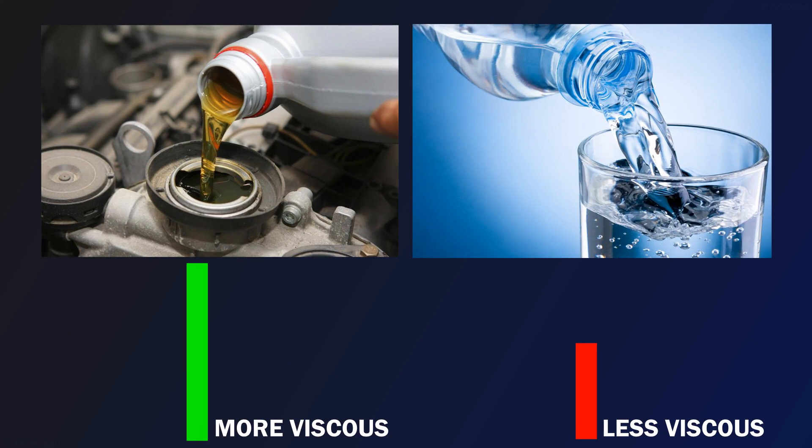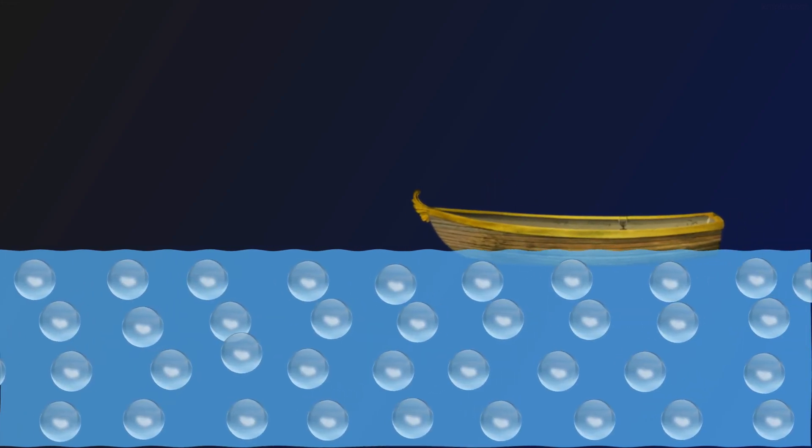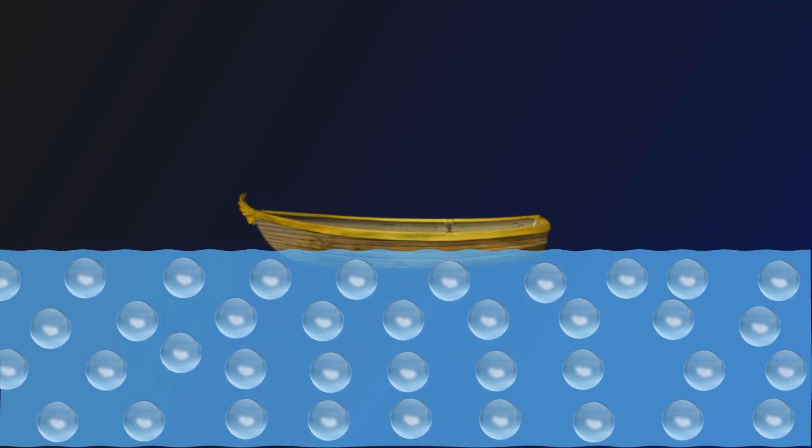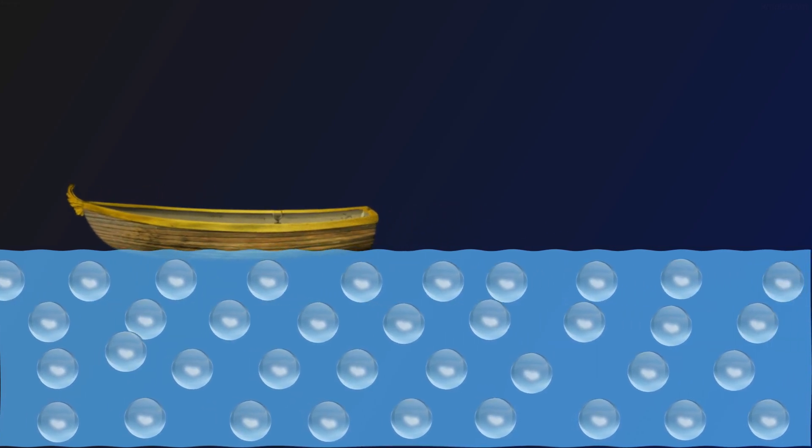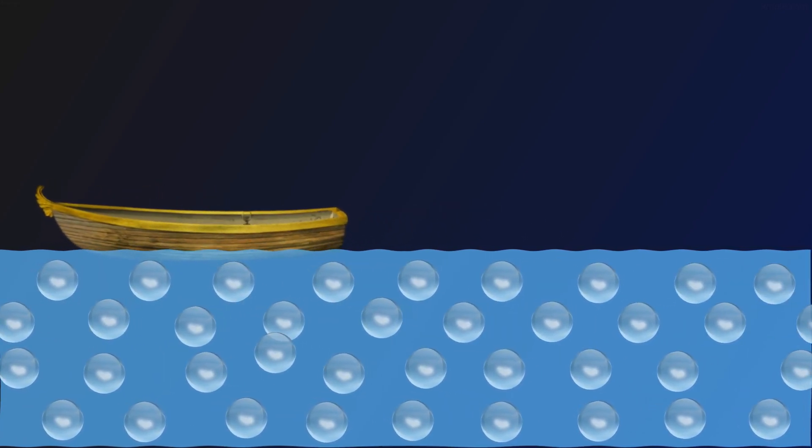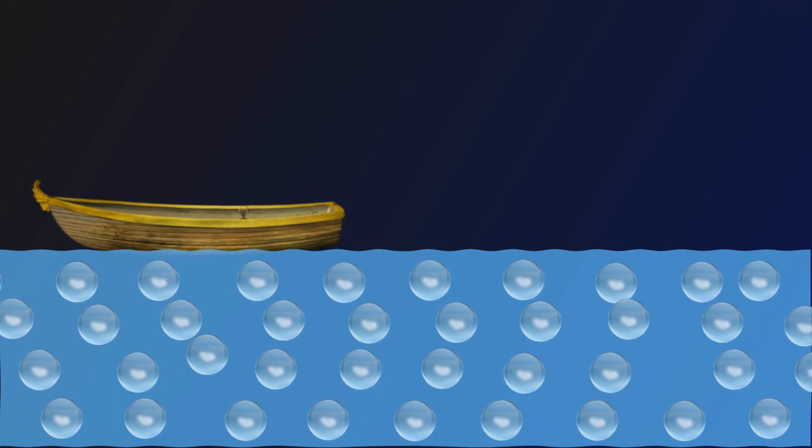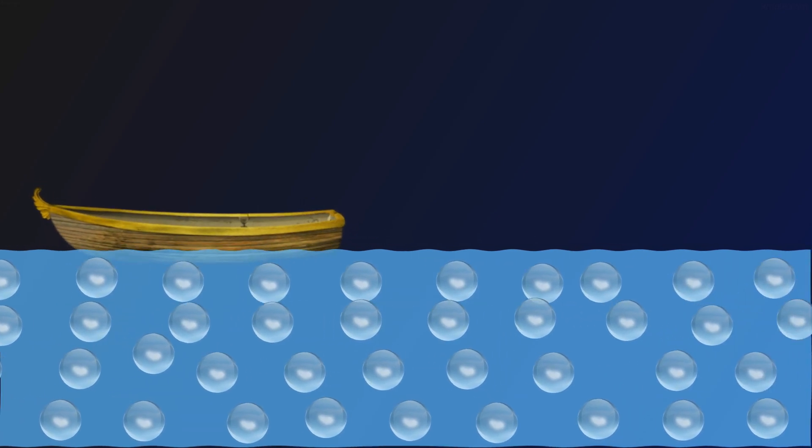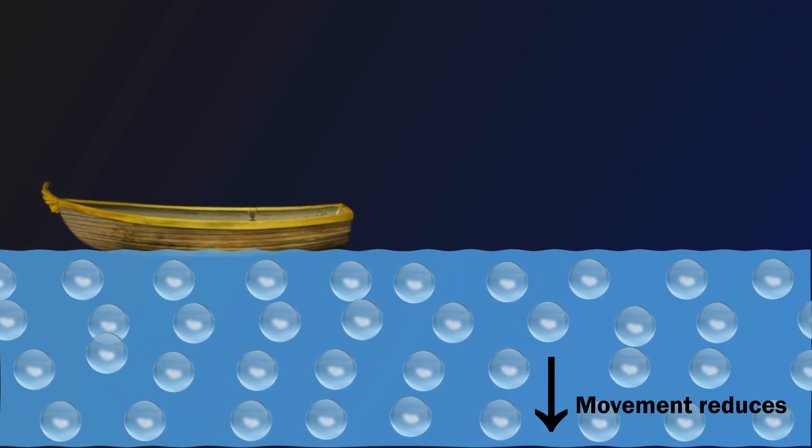Now let's understand what happens when a solid object moves in or on the liquid. Imagine a boat is moving on water. With the boat, water molecules on the top layer are also moving. As we move deeper and deeper, movement of particles reduces.